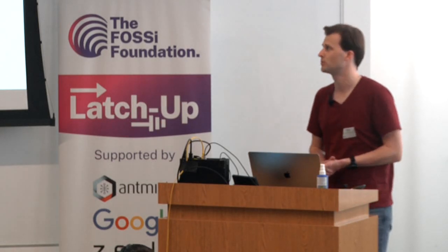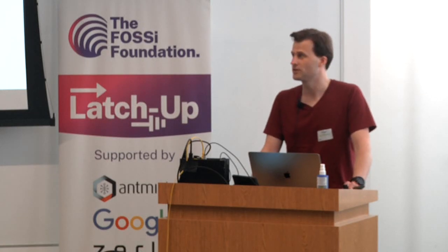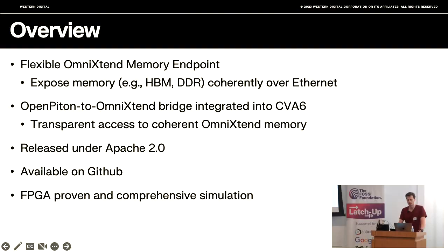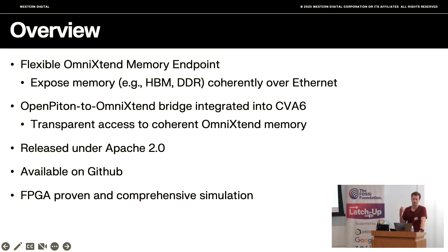What you're going to see today, and what you can use if you want to, are two things. First, we have released memory endpoints, so you can attach coherently memory over Ethernet via OmniExtend. The second thing is we have an open Python to OmniExtend translation layer — a transparent bridge — integrated into CVA6. Both are released under Apache 2.0 and are available on GitHub. We've also tested them both on FPGA, and you can simulate them if you don't have hardware available.